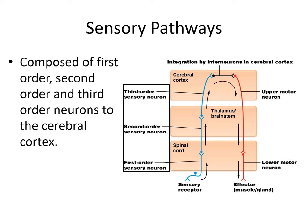Recall that we said the thalamus was sort of like the grand central station of the brain, so it's not surprising that sensory pathways go through the thalamus or the brainstem to the cerebral cortex. In sensory pathways, we have first order, second order, and third order neurons as they ascend through the central nervous system.